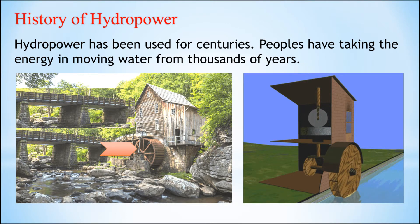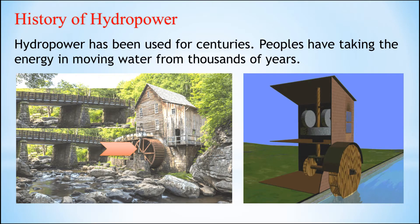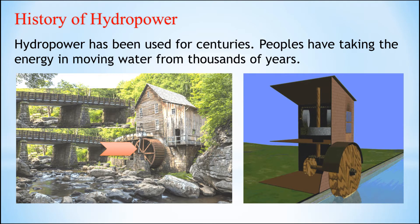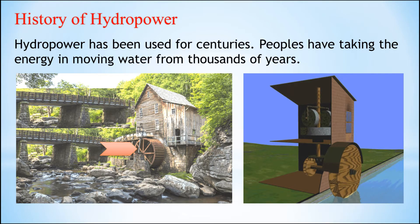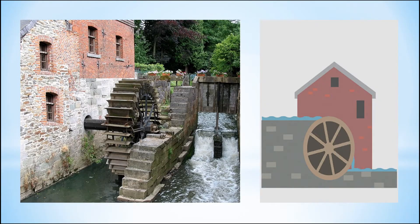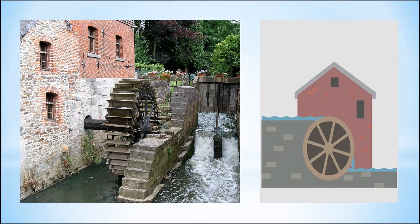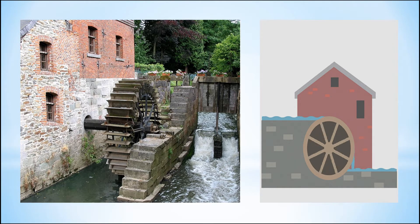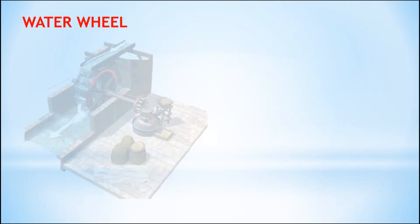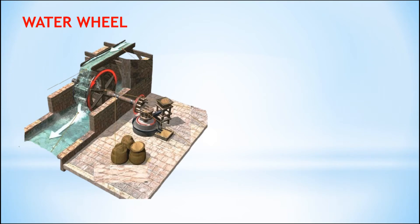In the early 18th century, American and European factories used the water wheel to produce power for their machines. The water wheel is a simple machine — it picks up flowing water in buckets located around the wooden wheel, and the weight of the water causes the wheel to turn and rotate. Water wheels convert the kinetic energy of water into mechanical energy, which can then be used to grind grain, drive saw mills, or pump water.